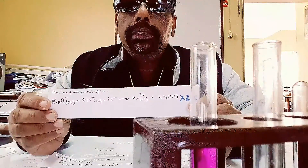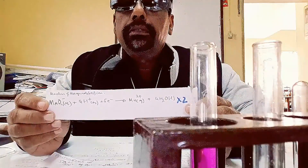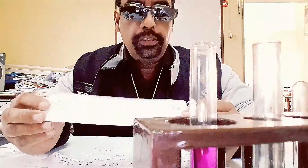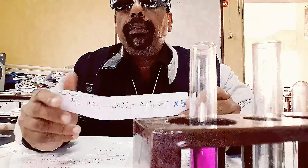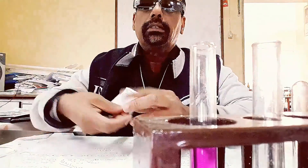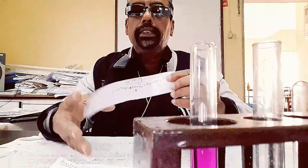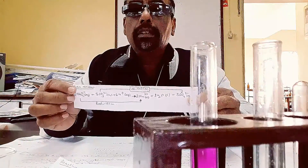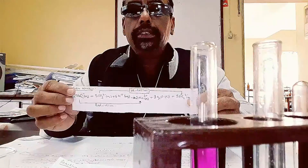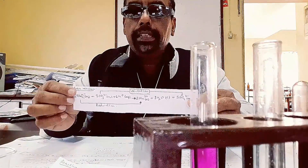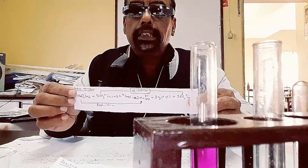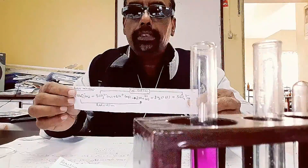To balance the redox equations, we multiply the manganate half-equation by two and the sulfite half-equation by five, so that when we add the two equations the electrons cancel. The result shows the manganate reduced to Mn²⁺ and the sulfite or sulfur dioxide oxidized to sulfate, with transfer of electrons from the reducing agent to the oxidizing agent.